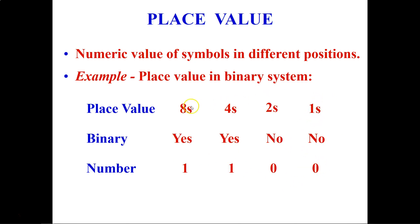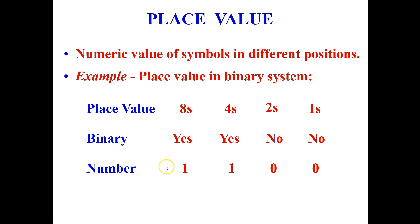The question is how we get these place values. Place values come from the base value. The base for binary is 2. So if you do the math: 2 to the power 0 is 1, 2 to the power 1 is 2, 2 to the power 2 is 4, and 2 to the power 3 is 8. That's how place values in the binary system are obtained, and based on these we can determine binary numbers.